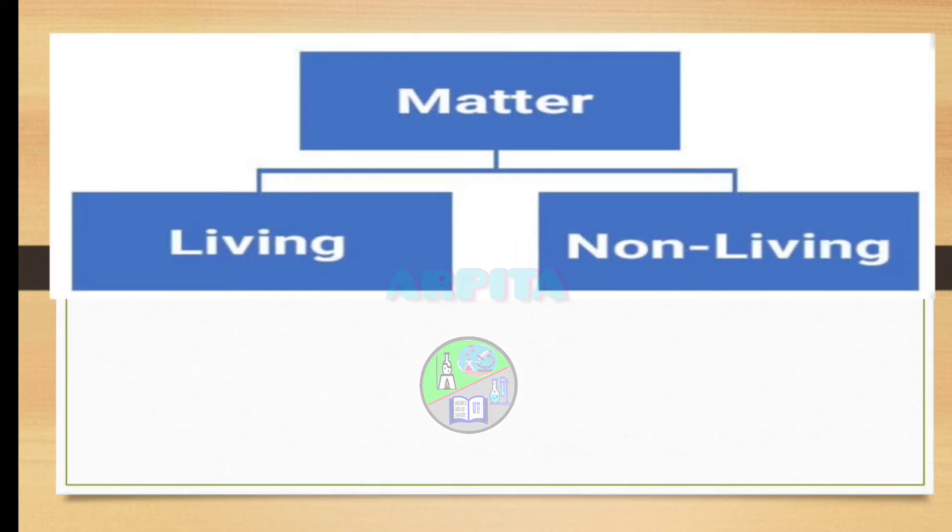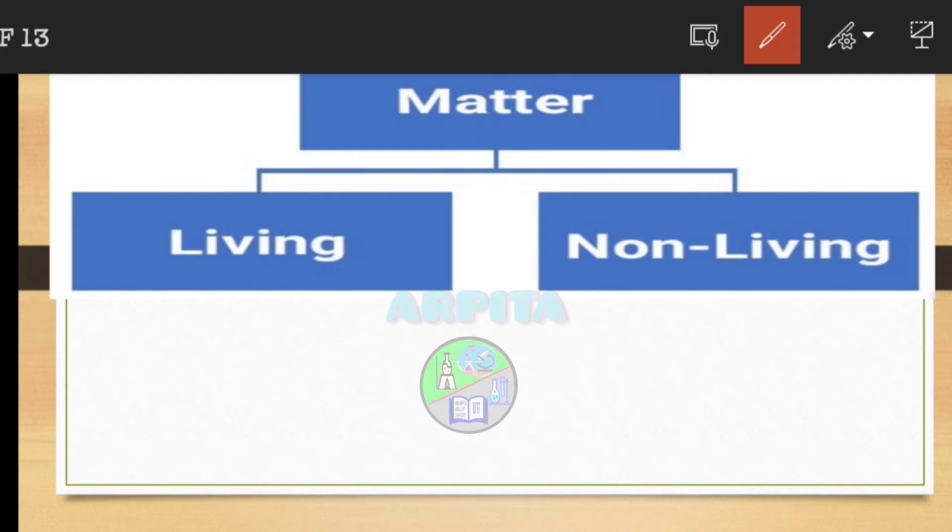Now living things are further divided into two categories. The first one is plants and second is animals.